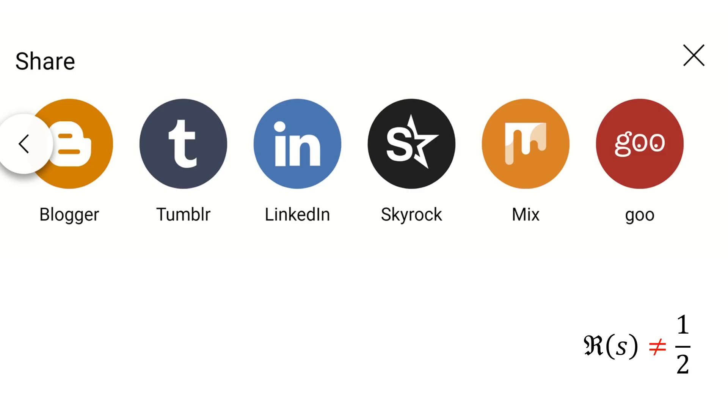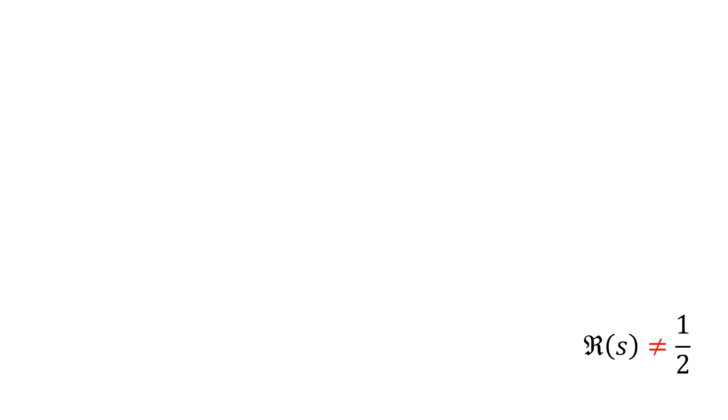If the real part of s is not equal to one half, we can say one minus real part of s cannot be equal to real part of s. This or this or this. Therefore this limit cannot be zero, which means this.